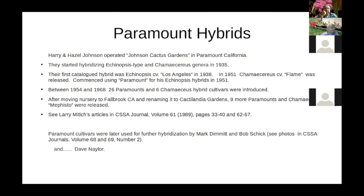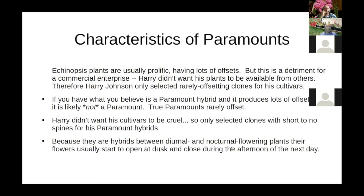So I was later using Paramounts for further hybridization. Let's look at the characteristics of Paramounts. Echinopsis plants are usually very prolific with lots of offsets, but for a commercial enterprise selling them, that's a detriment. Harry Johnson didn't want his plants to be propagated by other people, so he only selected rarely-offsetting clones for his cultivars. Anything that came up with fantastic flowers but created lots of offsets, he discarded.